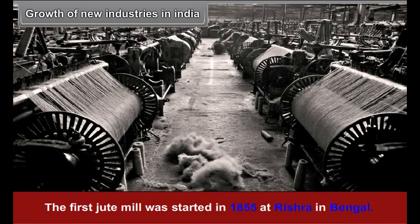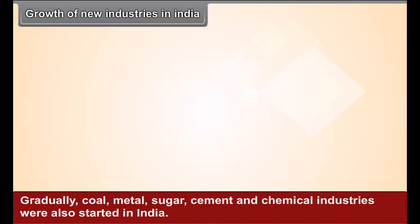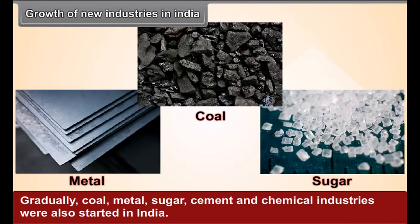The first jute mill was started in 1855 at Rishra in Bengal. Jamshedji Tata established Tata Iron and Steel Company's steel-producing plant at Jamshedpur in 1907. Gradually, coal, metal, sugar, cement and chemical industries were also started in India.